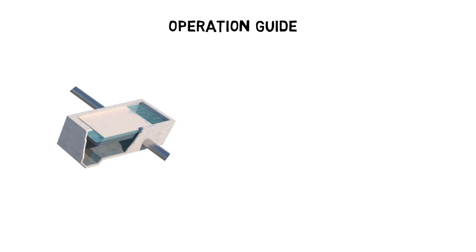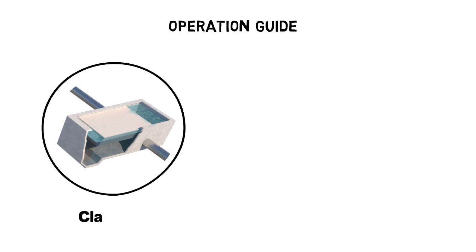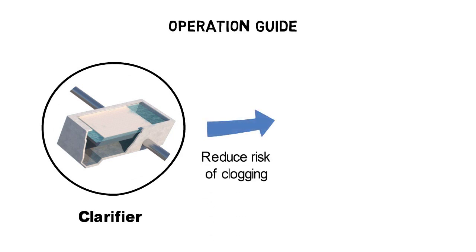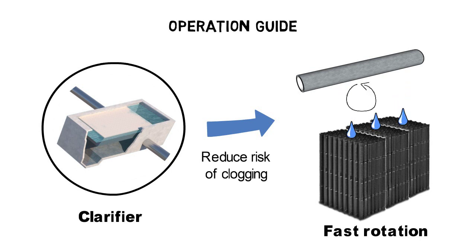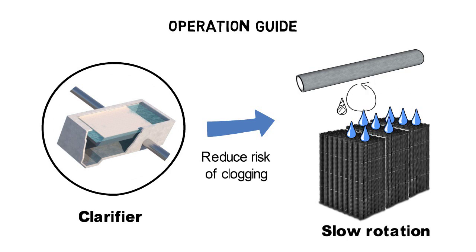In order to avoid clogging, a primary sedimentation process precedes the trickling filter. Also, the design of the rotary distributor has a high impact on the risk of clogging. The rotation velocity of the rotary distributor can be changed by either adjusting the incoming water flow or by using an electrical motor. The smaller the rotation velocity, the higher the water volume per square foot and the bigger the flushing effect.